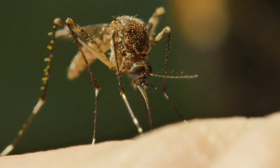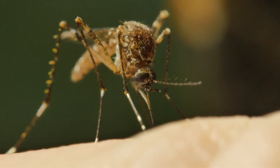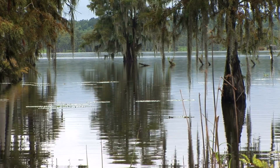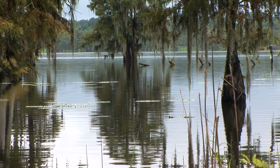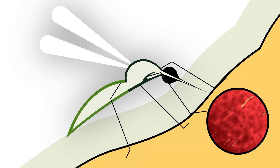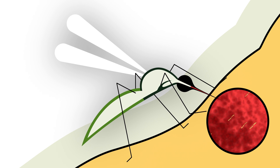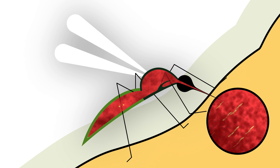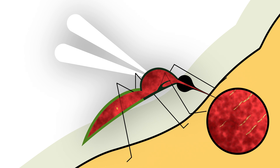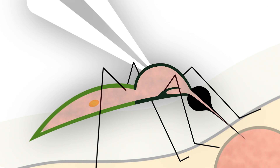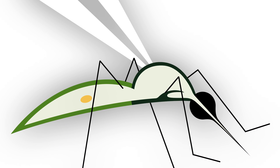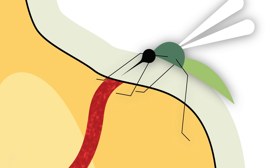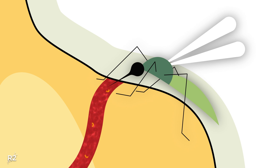Malarial parasites are carried by the Anopheles mosquito, which breeds in still water such as marshy ponds and swamps — features that exist in great numbers in the eastern and southern United States. When a mosquito bites an infected person, a small amount of blood is taken in containing microscopic malaria parasites, which then mate in the gut of the mosquito and begin a cycle of growth and multiplication. About one week later, a form of the parasite called a sporozoite migrates to the mosquito's salivary glands, and when the mosquito takes its next blood meal, these parasites are injected into the next person being bitten.